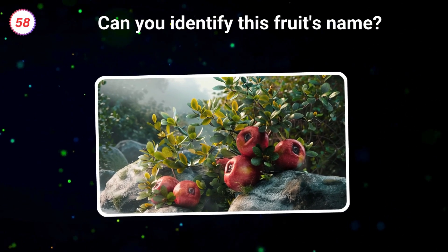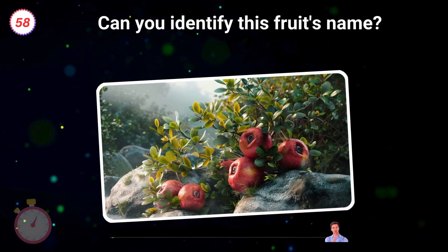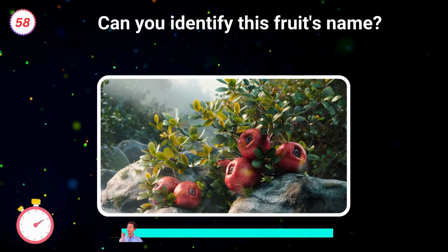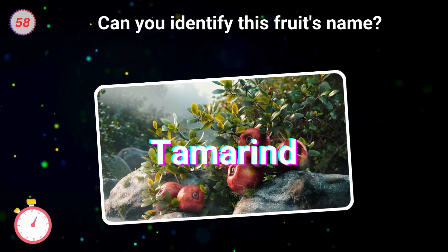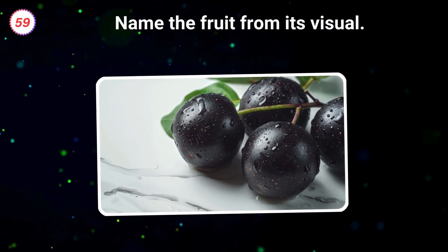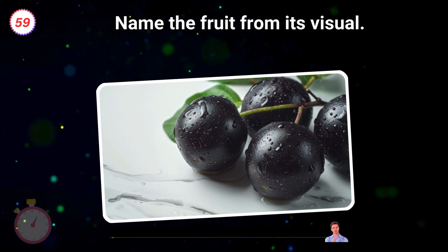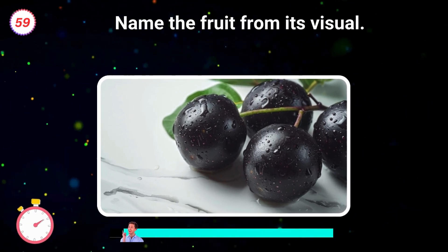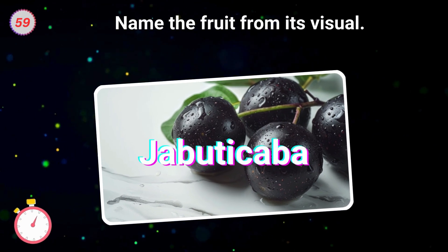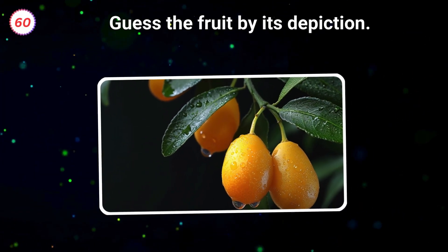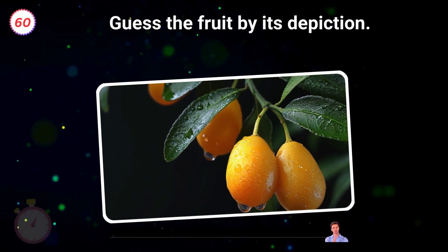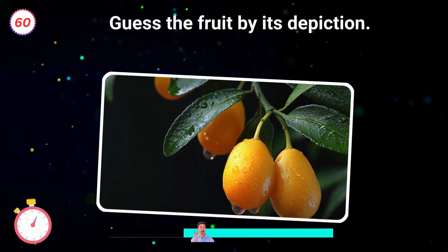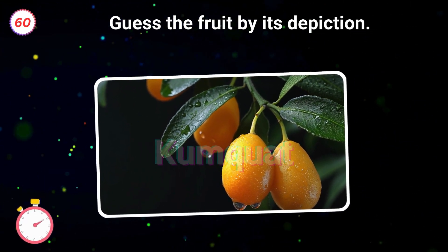58. Can you identify this fruit's name? Tamarind. 59. Name the fruit from its visual. Jabuticaba. 60. Guess the fruit by its depiction. Kumquat.